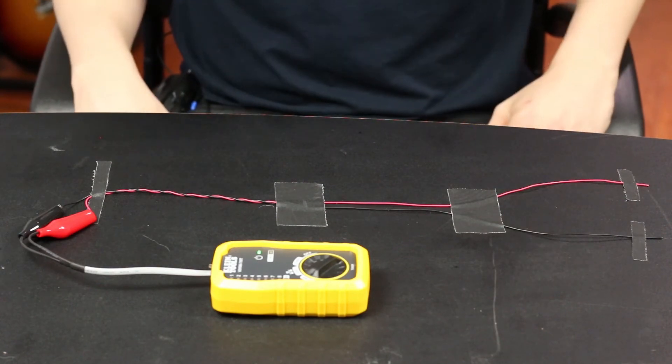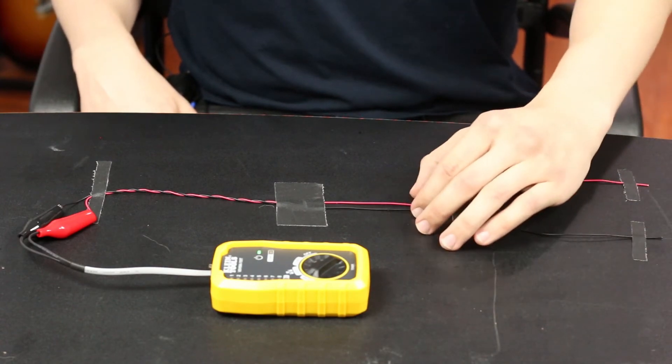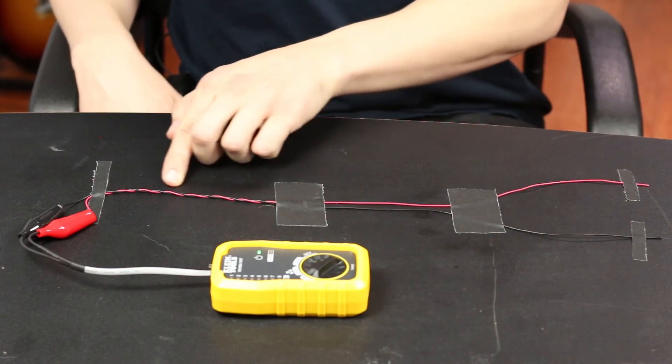There are three sections of wires. One section, they're completely separated. The second section, they're a bit closer together. And the third section, they're twisted.